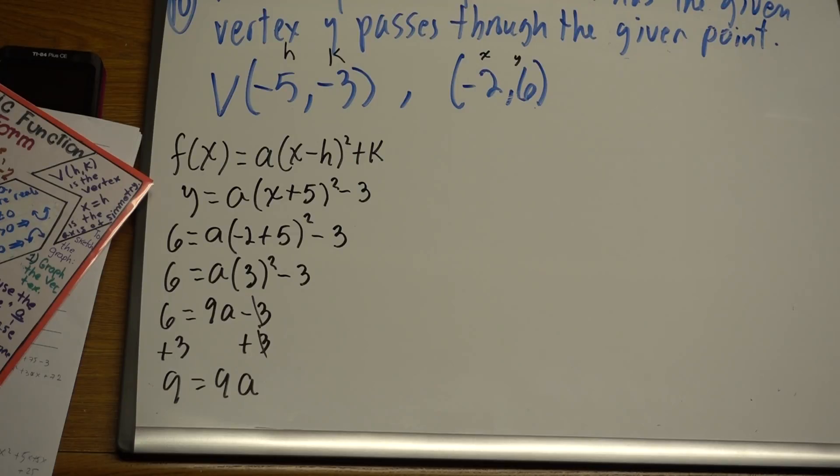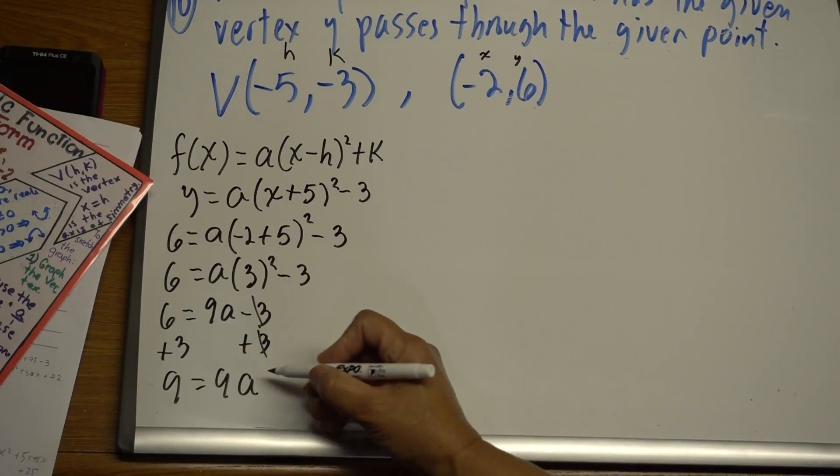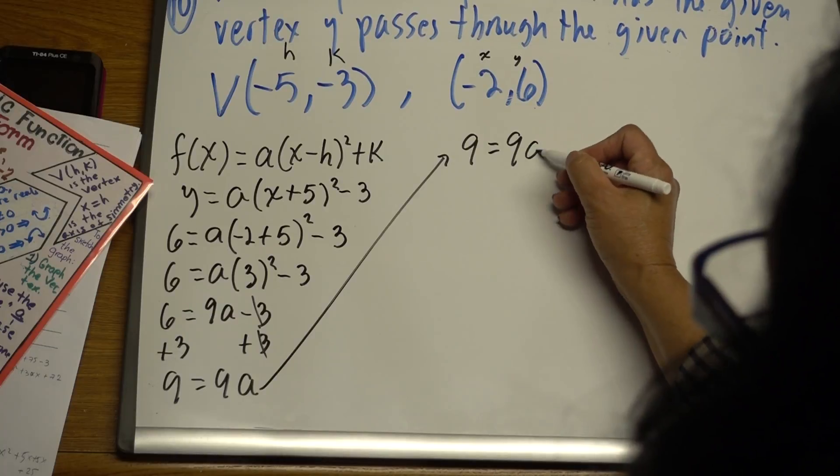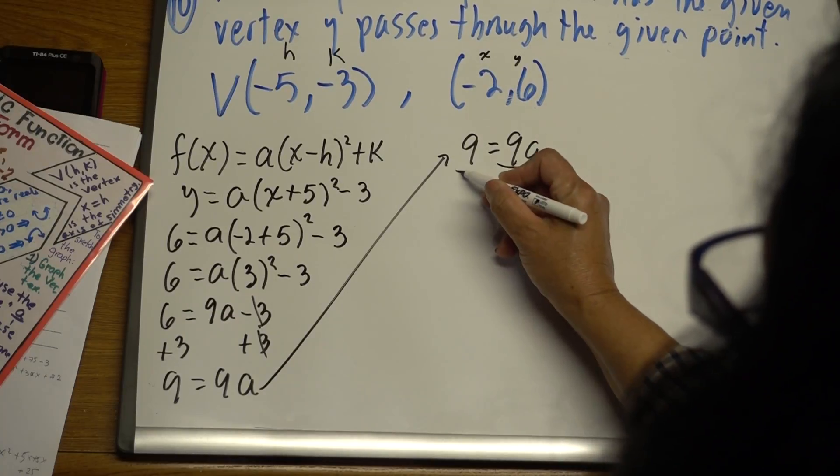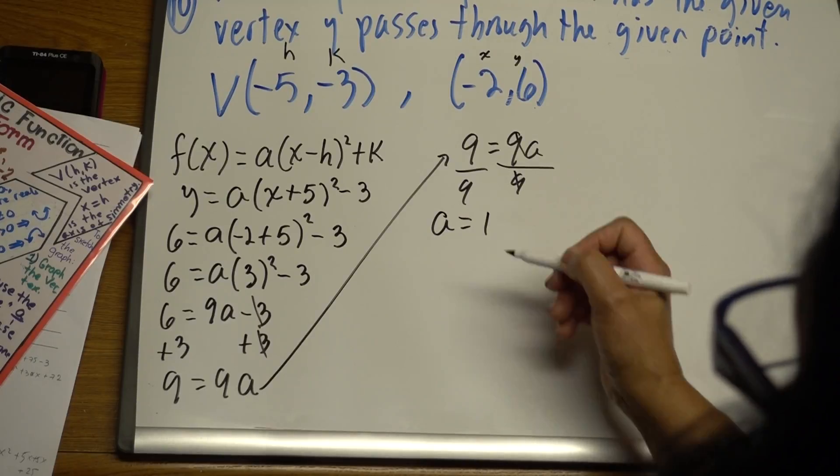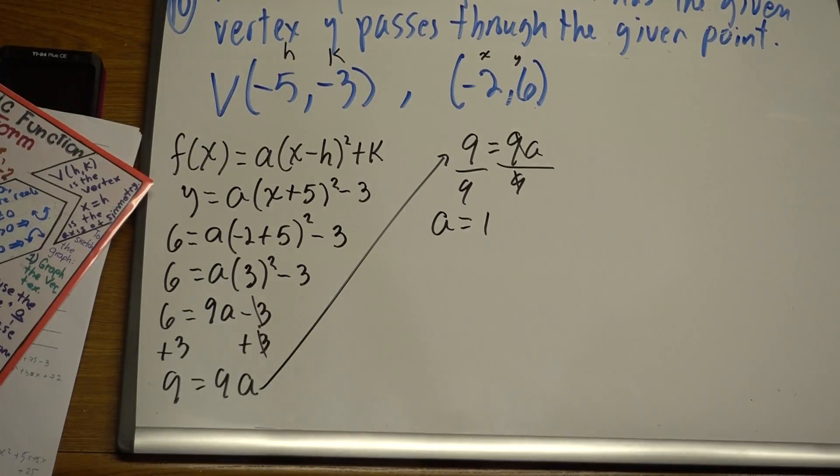We divide both sides of the equation by 9. We cancel this, and a is equal to 1, which is what we need, right?